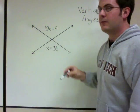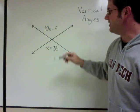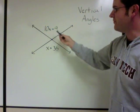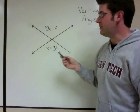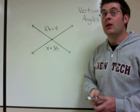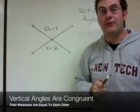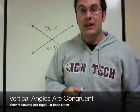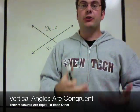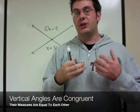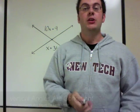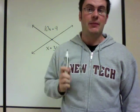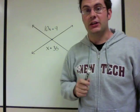For this problem we'll work with one pair of vertical angles: 10x plus 9 and x plus 36. An important fact about vertical angles is that they're congruent — their angle measures are equal to each other — and we'll use that to solve.